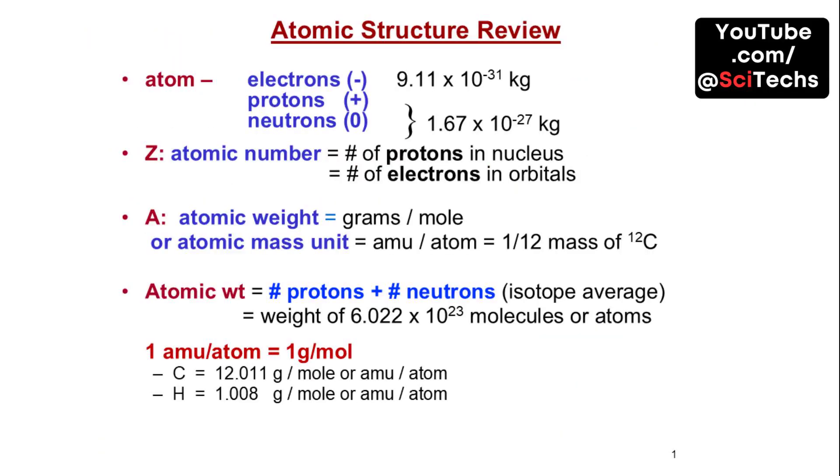Let's review atomic structure. An atom consists of electrons, protons, and neutrons. The atomic number is the number of protons in the nucleus, while the atomic weight is the sum of protons and neutrons. Atomic mass unit is a standard unit for measuring atomic mass.